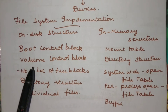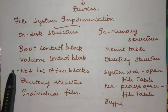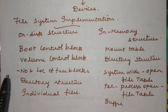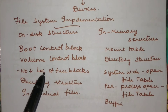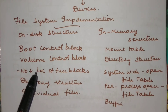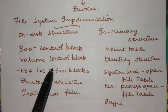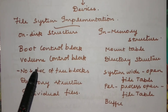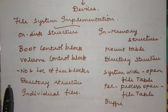The next component is the volume control block, which stores information about the volume — such as the number of blocks available in the disk, the size of each block, the number and location of free blocks, and the free block pointer. It also holds information about the FCB (File Control Block) count, how many free FCBs are available, and the free FCB pointer. In a Unix file system this is called the superblock, and in Windows it is called the master file table.